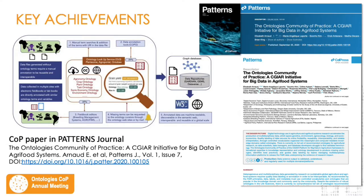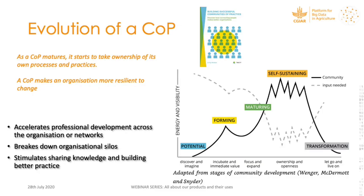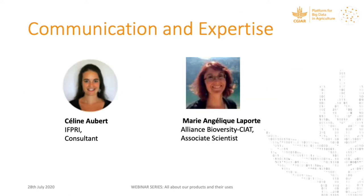The key achievements of the community of practice are written in a paper published in the Patterns Journal dedicated to machine learning. In her book Successful Community of Practice, Emily Weber proposes a schema about the phases a COP goes through. Over four years, we went from forming the COP to the early stages of maturity. As she indicates, a matured COP takes ownership of its own processes and makes an organization more resilient to change.